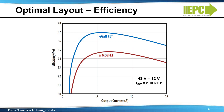Both converters employ the optimal layout technique, but the tiny GAN chip scale EPC2045 allows for considerably lower loop inductance than the larger silicon MOSFET. This, coupled with the faster switching edge of GAN, has a significant impact on the system performance as indicated by the more than 2% higher peak efficiency shown in these performance curves.